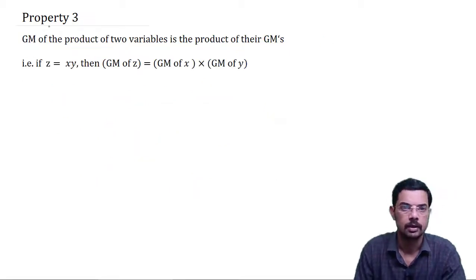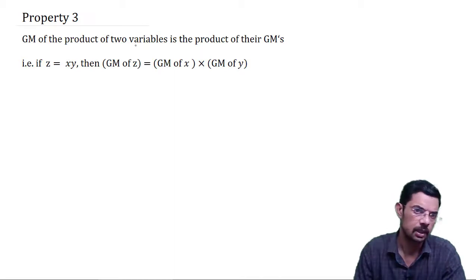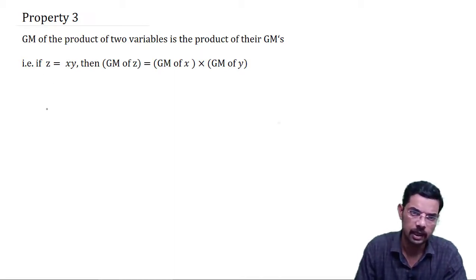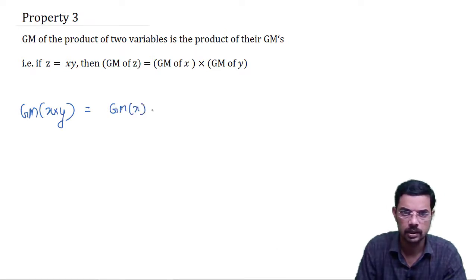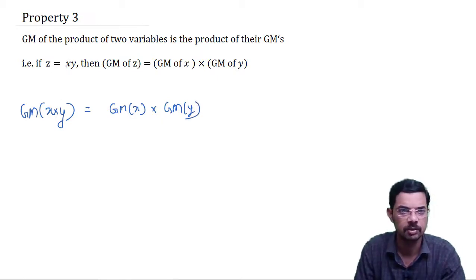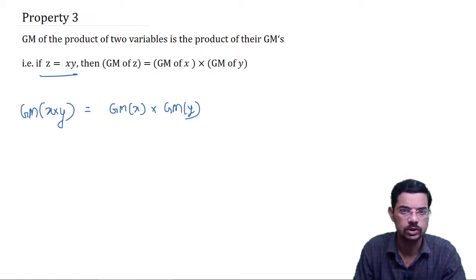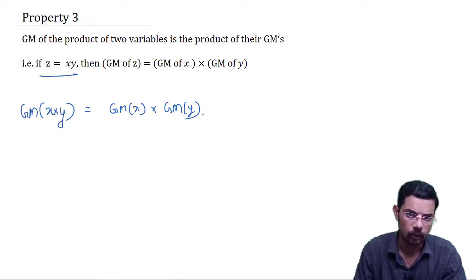Property 3: the geometric mean of the product of two variables is the product of their geometric means. If x and y are two sets of values and z = x × y, then GM of z equals GM of (x × y), which equals GM of x multiplied by GM of y.